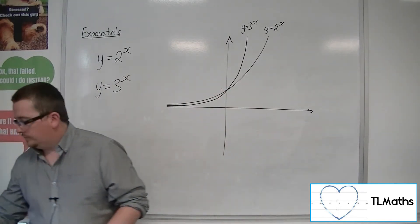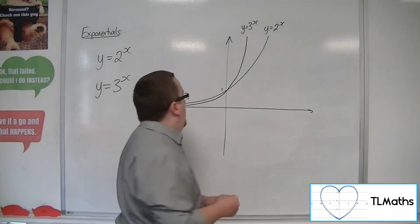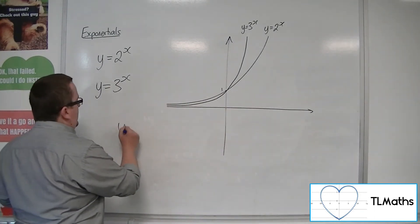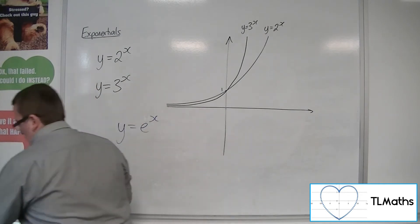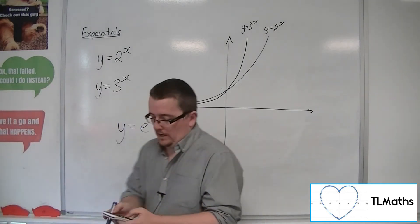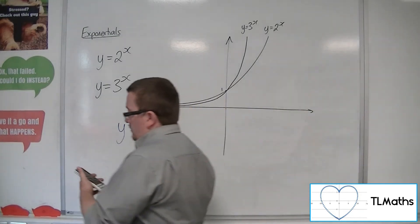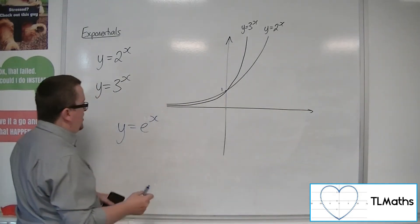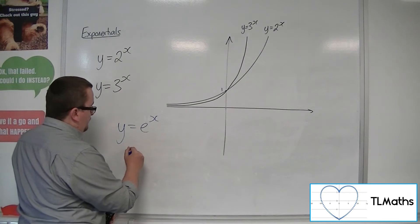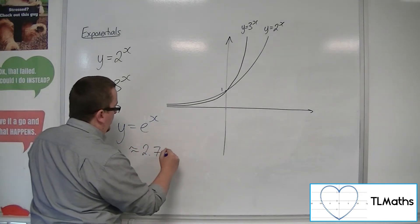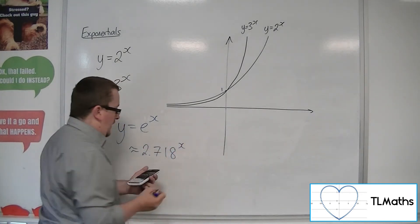So y equals e to the x. Now remember, when you type it into your calculator, e to the 1, e is 2.718 to four decimal places. So this is like 2.718 to the x.